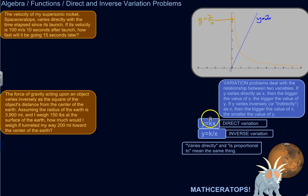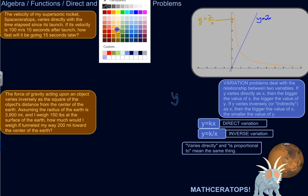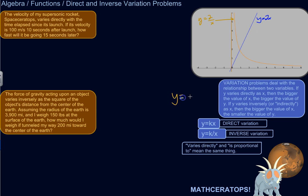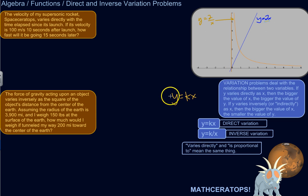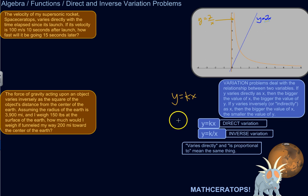The direct variation relationship can be described like this: if y varies directly as x, then y equals x times some constant k. In this example the constant was 2, but it could be anything. This is why saying y varies directly as x is the same as saying y is proportional to x — it's x times some number.